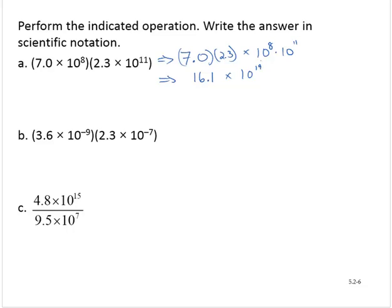But this is not scientific notation. So let's rewrite that 16.1 moving the decimal over. That would be 1.61 times 10 to the 1st power. Multiplying that by 10 to the 19th power yields 1.61 times 10 to the 20th power.